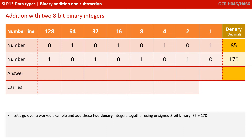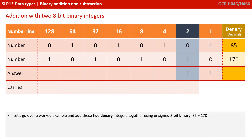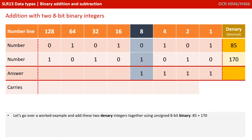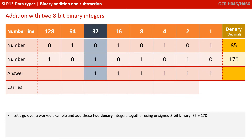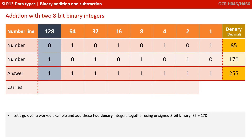I've written out those two binary numbers — in the previous video we showed you how to do that, but here we're going to focus on adding them together. Starting on the right-hand side with the column that has a weighting of 1, we follow the four rules: 1 plus 0 is 1; 0 plus 1 is 1; 1 plus 0 is 1; 0 plus 1 is 1; 1 plus 0 is 1; 0 plus 1 is 1; 1 plus 0 is 1; and 0 plus 1 is 1.